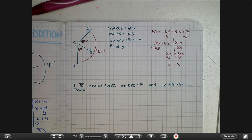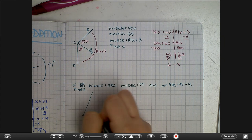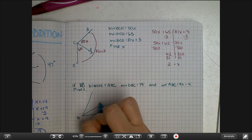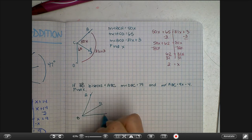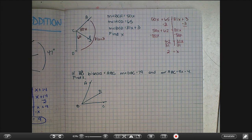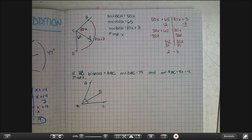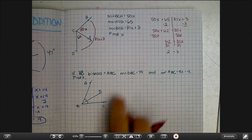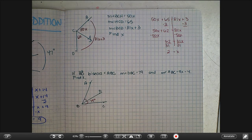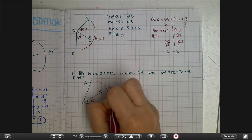So here again we don't have a picture. The best idea is to draw one. It of course won't be to scale, but getting used to drawing pictures is fantastic. We're going to fill in the information we know. We know that this is a bisector which means that those two pieces have to be congruent. The measure of DBC is 79 degrees. The measure of ABC, the whole thing, is 9x minus 4.